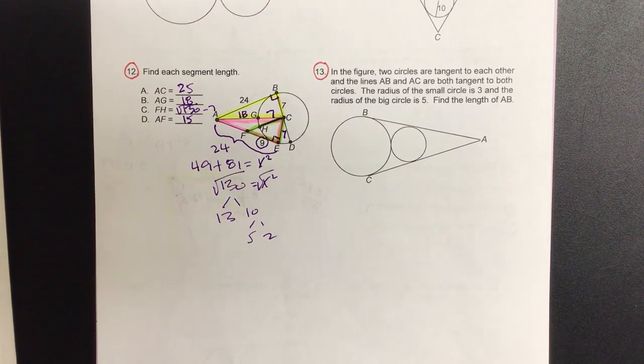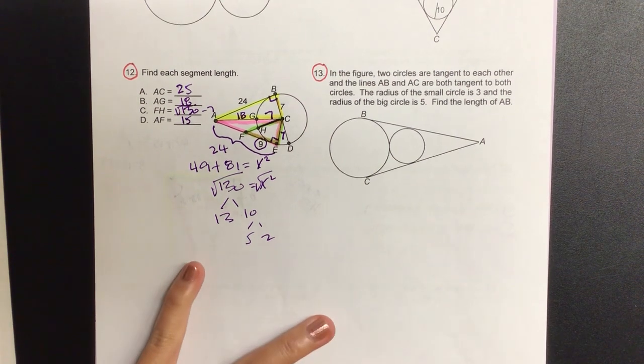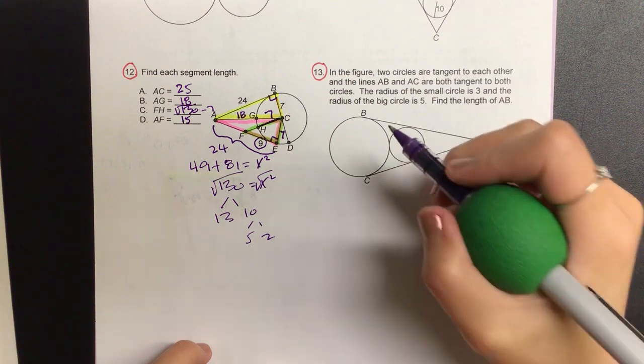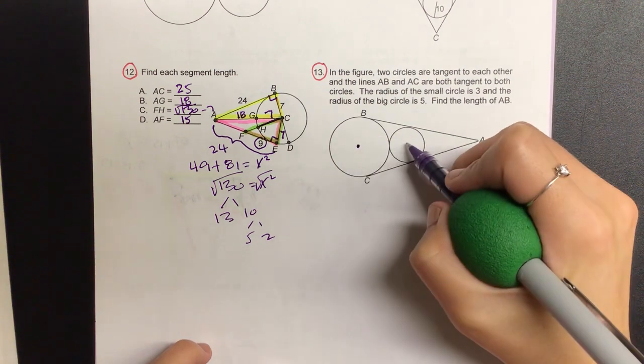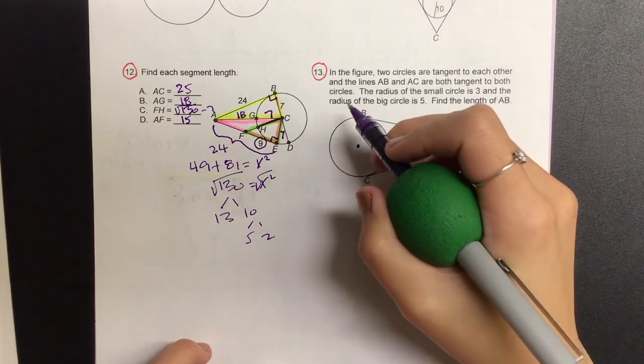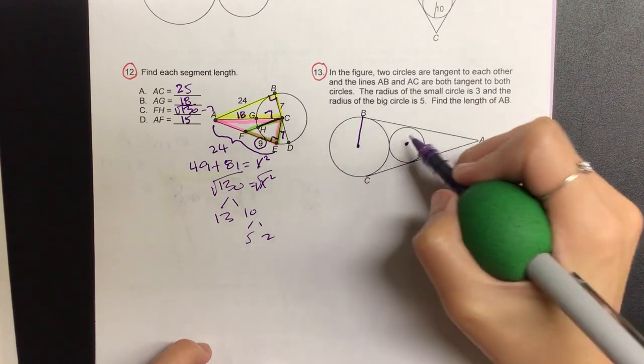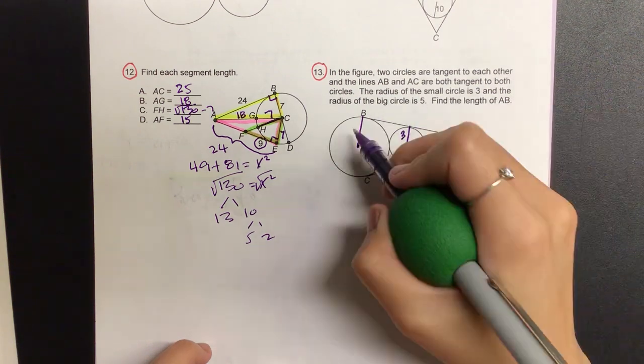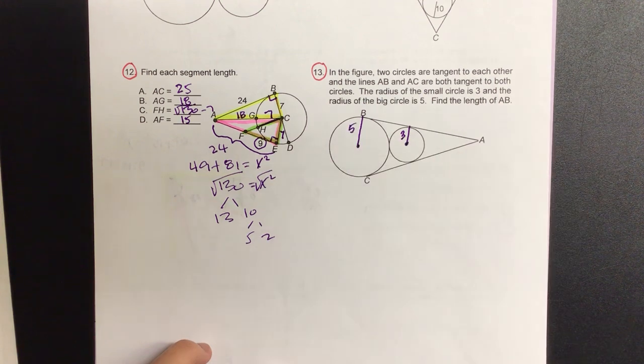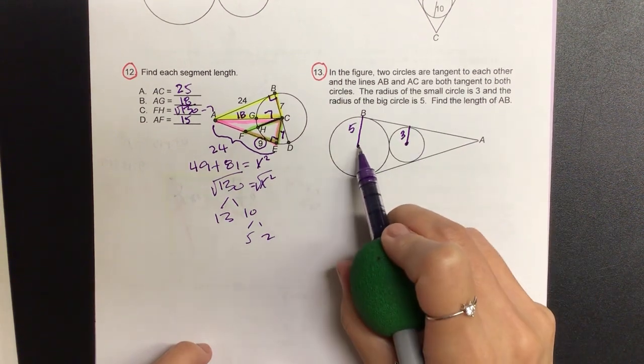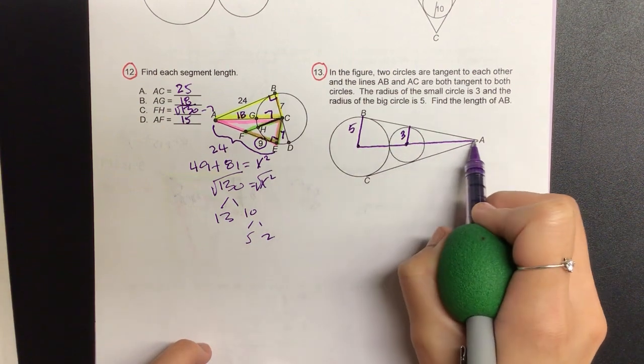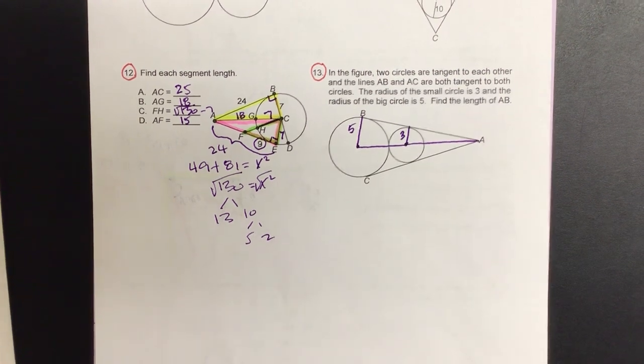Okay, let's read. In the figure, two circles are tangent to each other, and the lines AB and AC are both tangent to both circles. The radius of the small circle is 3 and the radius of the big circle is 5. Find the length of AB. Okay, let's put a dot at the center. And because we're looking at tangents, let's go ahead and connect them. What was the radius of the smaller one? 3. And then the bigger one is? 5. And then what I want you to do is connect center to center to the vertex. And that should cut it exactly in half between these two, I guess, waffle cones.